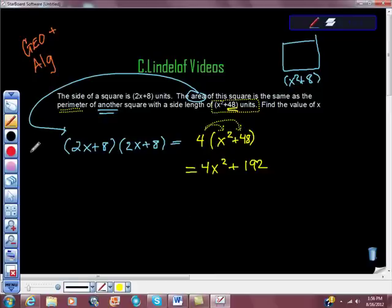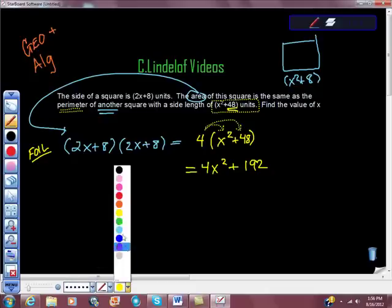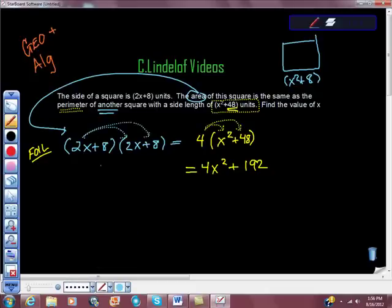Now I'm going to use FOIL to multiply this. It's going to be first, outer, inner, and then last. So that would look like this. It would give us 4x squared plus 16x plus another 16x plus 64.